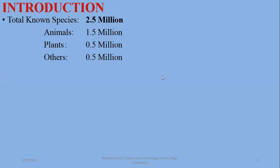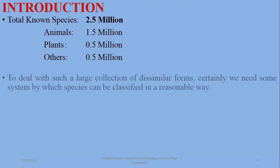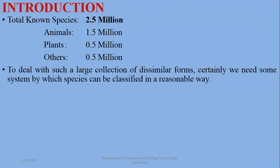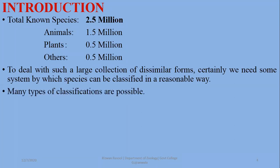Because of the vast number of species, there is enormous variety of life. That is why scientists classify these organisms into groups and subgroups, so that they can be studied easily.